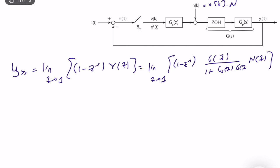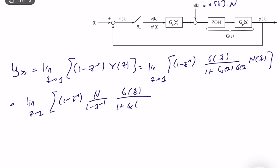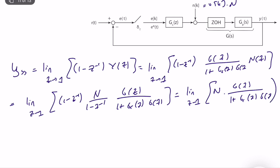What we need to compute is y steady-state, equal to the limit as z goes to 1 of (1 minus z^{-1}) times y(z). When analyzing steady-state performance with respect to disturbance inputs, we look at the steady-state response of y. This equals the limit as z goes to 1 of (1 minus z^{-1}) times g(z) divided by [1 plus gc(z) times g(z)] times n(z), where n(z) is the Z-transform of the unit step disturbance input.